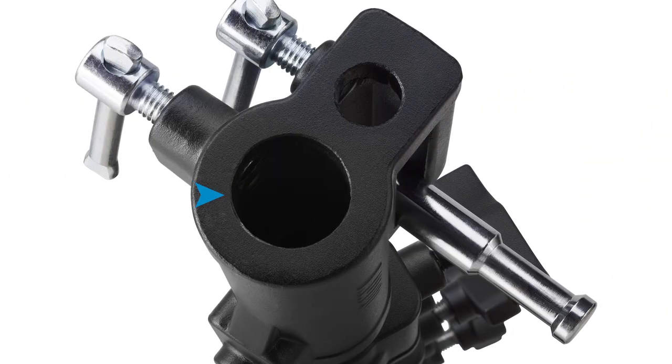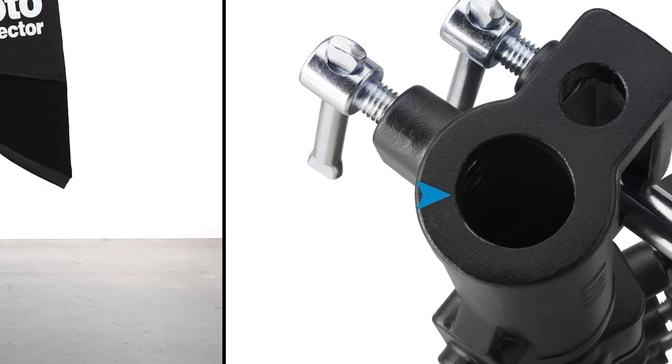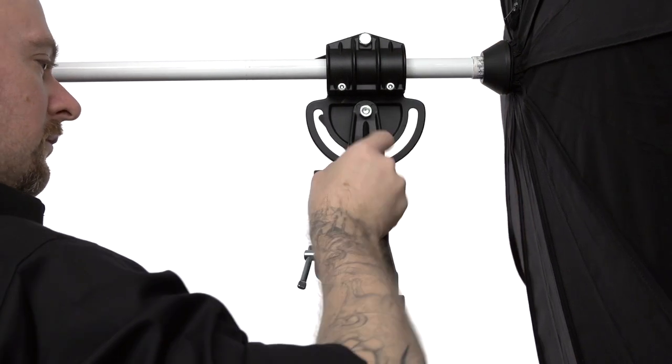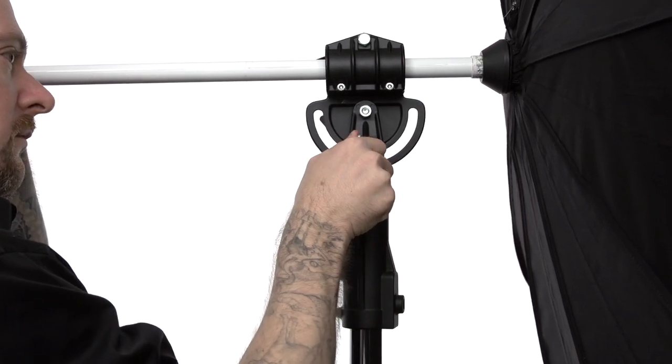This head also features a junior receiver for fixtures with a junior pin or accessories, such as this Pro Footer Giant umbrella. Just tighten the uppermost sliding set screw until snug and you are good to go.